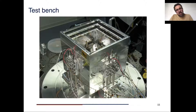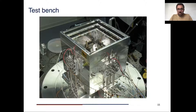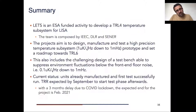Here you see a picture of this test bench, showing the three aluminum layers. This is the inner part of the vacuum chamber, and inside you see already some parts of the aluminum block where the sensors will be placed. On the outer part you can see the Peltier elements inside the structure, and as I said all of these will be inside a vacuum chamber.